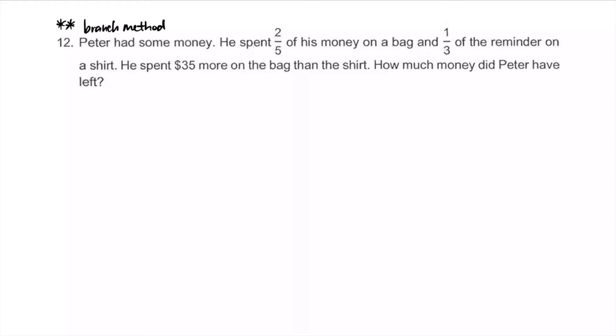Peter had some money. He spent 2/5 of his money on the bag and 1/3 of the remainder. This phrase instantly tells me we're using the branch method. Let's draw a model. This is the branch method diagram. 1 whole at first, 2/5 of that whole spent on the bag. What's the remainder? If 2/5 was spent on the bag, 3/5 is left behind. From this remainder, 1/3 was spent on the shirt. The other branch must form 1 whole, so that's 2/3.